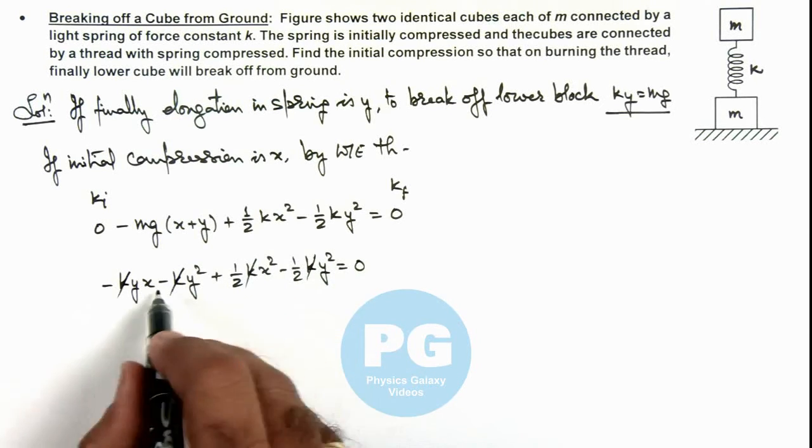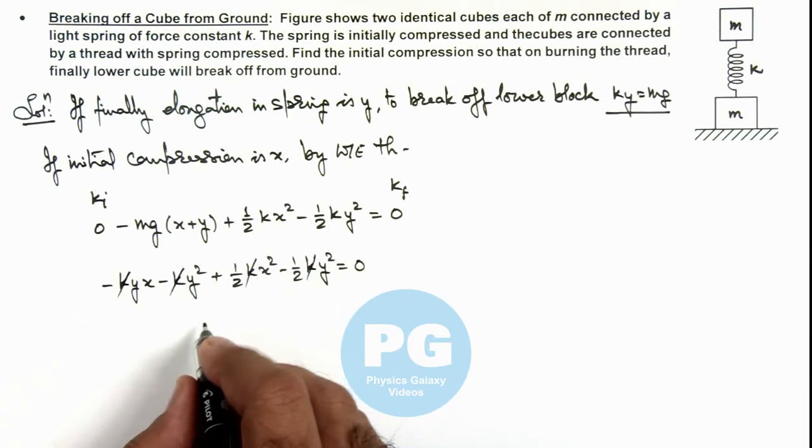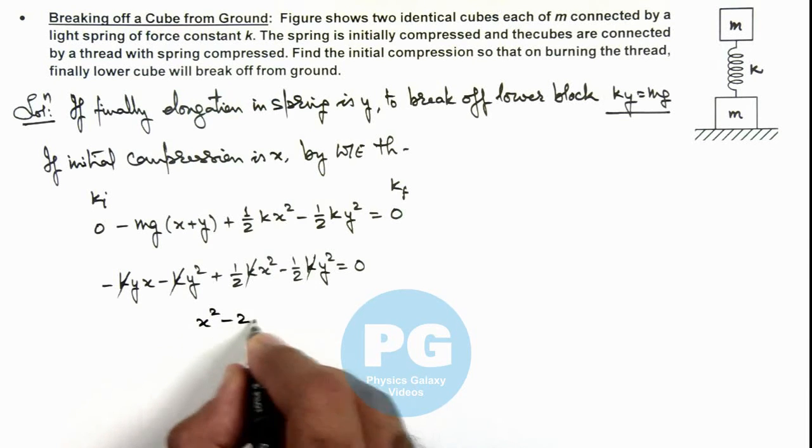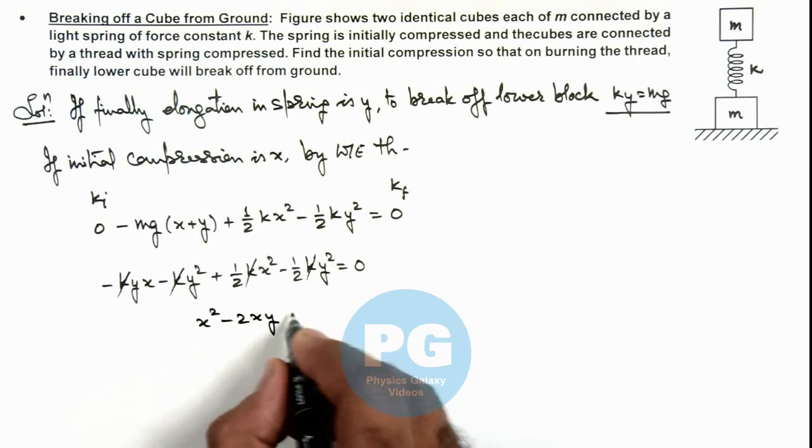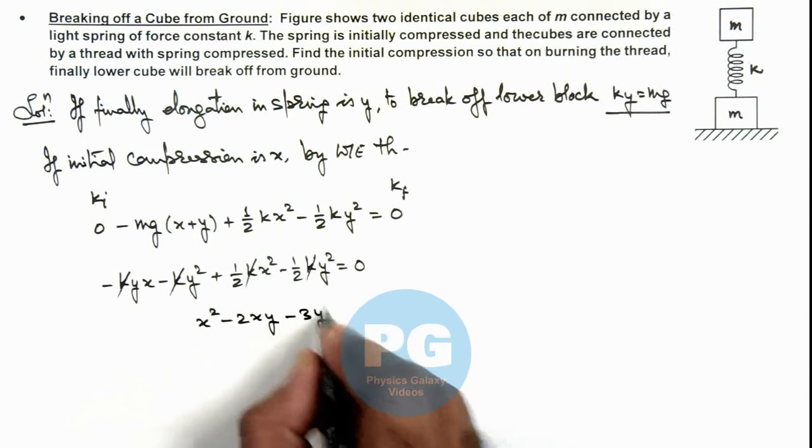In this situation, if we further simplify, this will be a quadratic equation rewritten as x² minus 2xy minus 3y² equals zero.